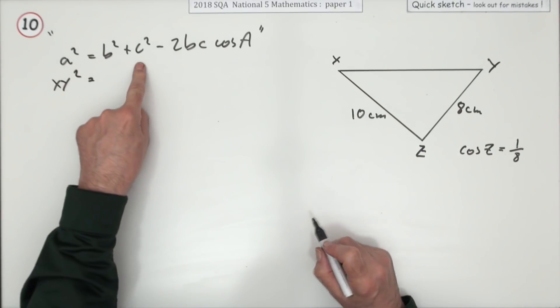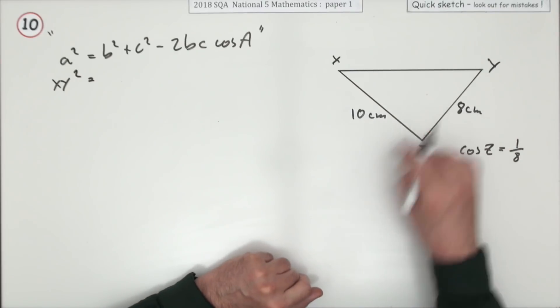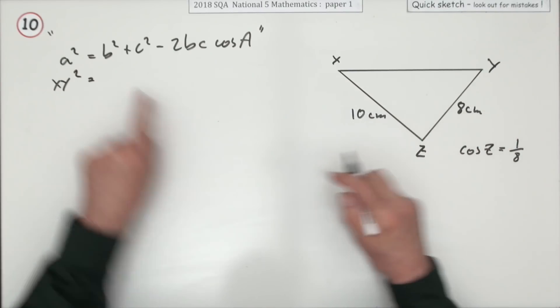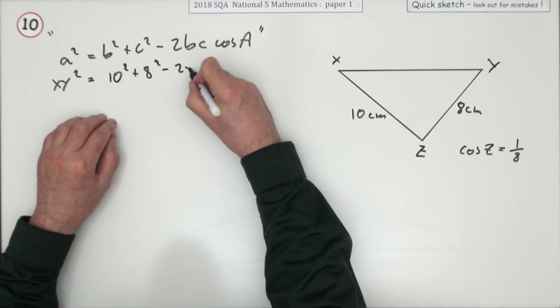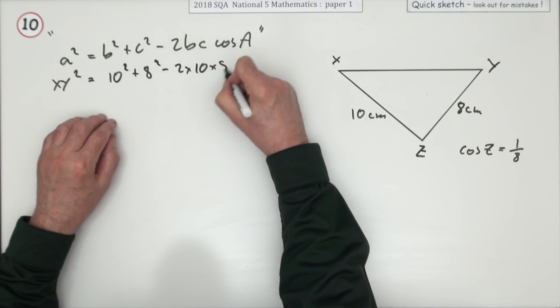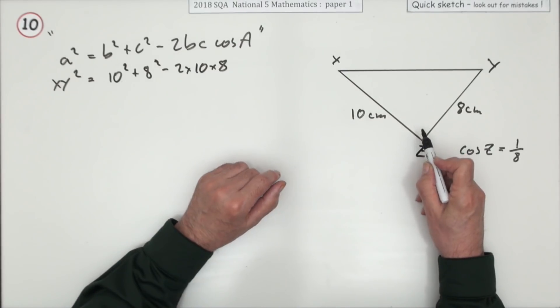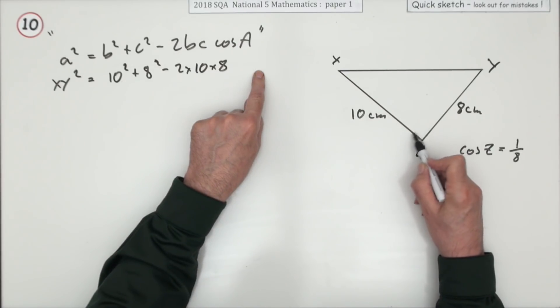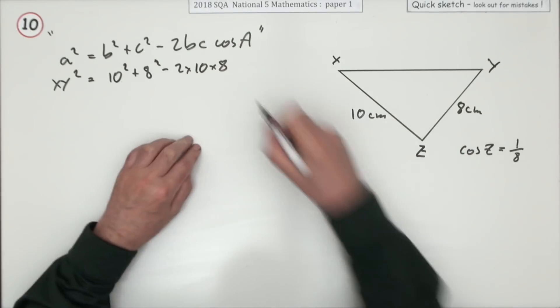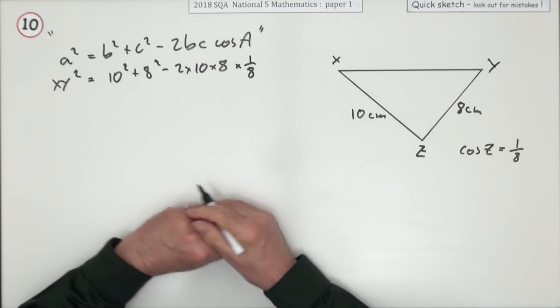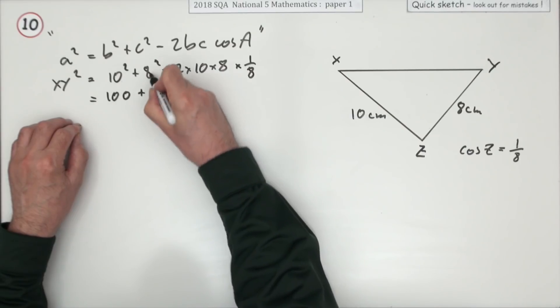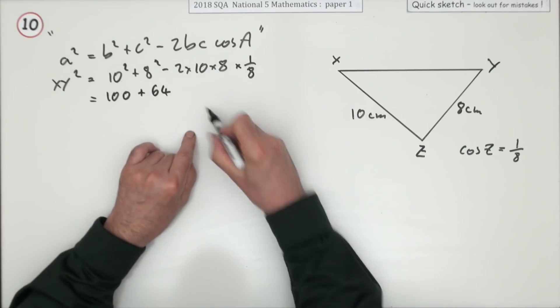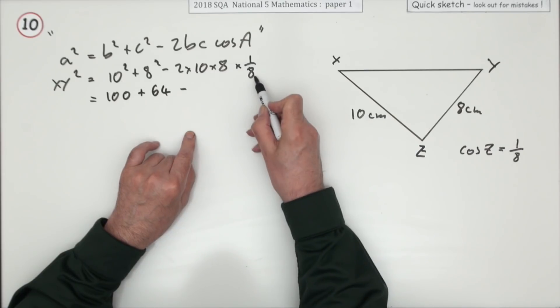Ten squared plus 8 squared, two times—there they are again—two times 10 times 8. Now what's this cos of a? What's this angle? That would be the cos of z. You don't know what z is, but better than that, you know the cos of it's one-eighth, so you just put in times one-eighth. Let's just go through the arithmetic: 10 squared is 100, 8 squared is 64. The eighth times the 8 cancels out, just leaving you with a 20.